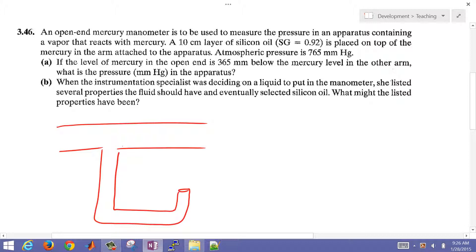It's just a tube filled with liquid. In this case, this is going to be mercury, and there's going to be a height difference of 365 millimeters.